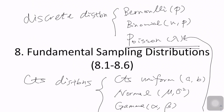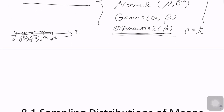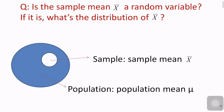We have learned three specific discrete distributions in Chapter 5 and four specific continuous distributions in Chapter 6. We're going to skip Chapter 7, and in Chapter 8 we're going to learn about sampling distributions.